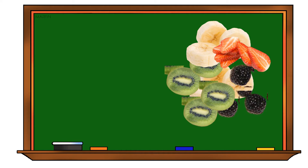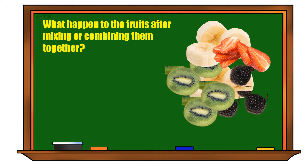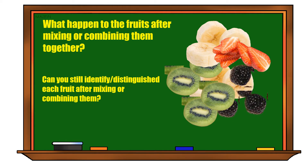Now class, we formed a mixture of mixed fruits. What happens to the fruits after mixing or combining them together? Do you think their properties change? No! Their properties do not change. The size, the color, the shape of each fruit remain the same after mixing together. Can you still identify and distinguish each fruit after mixing? Yes! You can still identify the strawberry, the banana, the kiwi, and the blueberry.